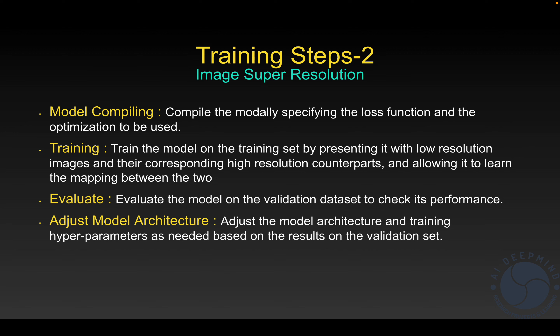The sixth step is training. Once we have defined the dataset, split it, normalized it, created the model architecture, and compiled the model, we start training. During training, we give low resolution images as input, and the model upscales them to produce high resolution images.